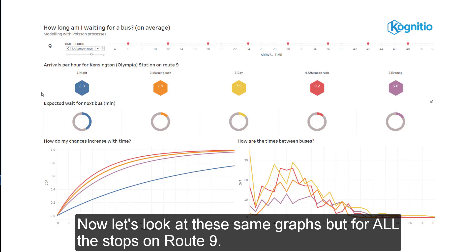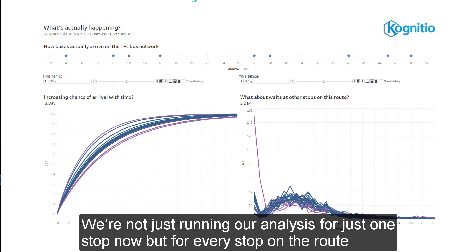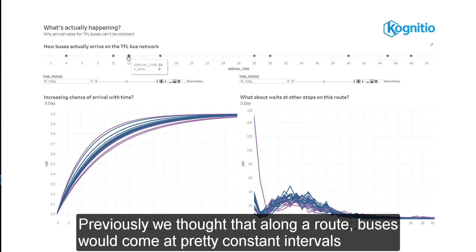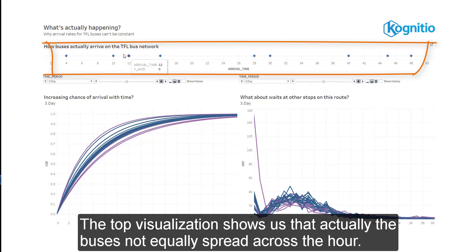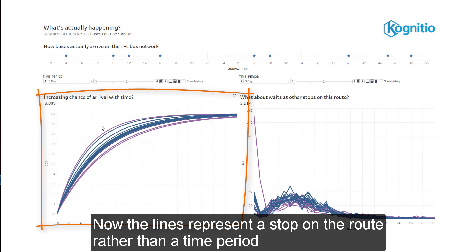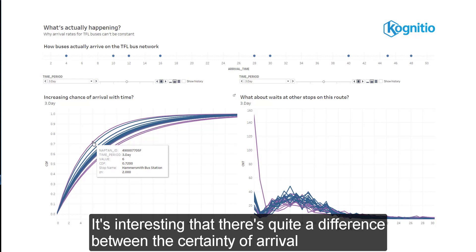Now let's look at these same graphs but for all the stops on Route 9. We are once again interactively querying the Cognitio SQL layer to run the analysis across all of them. We're not just running our analysis for one stop, but for every stop on the route, and for this we need ultra-high performance from the SQL layer. The top visualisation shows us that actually the buses are not equally spread across the hour — there is sometimes quite a large waiting gap, for example between 16 and 20 minutes in the hour. Now the lines represent a stop on the route rather than a time period, and the different colours are the travel zones, where blue is zone 1 and purple is zone 2.